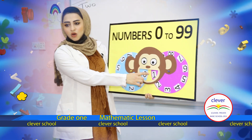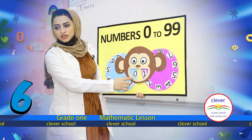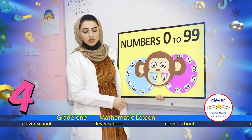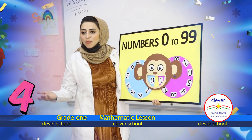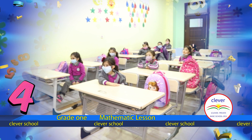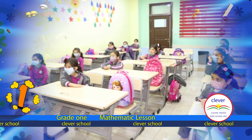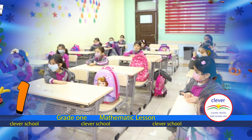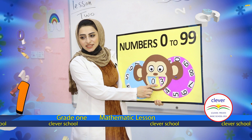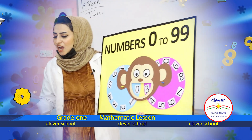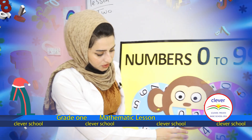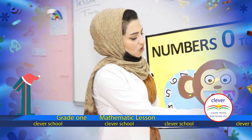Look at the mouth of the monkey. What number is it? 1! Which number comes after number 1? 2! Number 2! What number is it? 3! Which number comes after number 3? 4! Number 4!